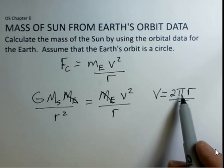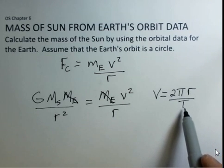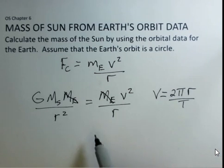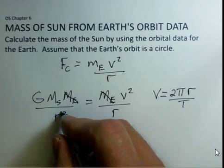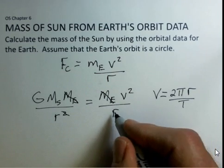We'll be putting in 4 pi squared R squared over T squared, and we'll be simplifying the R's. So if we do a little simplification right now, before we make that substitution, I get rid of one factor of R on each side.